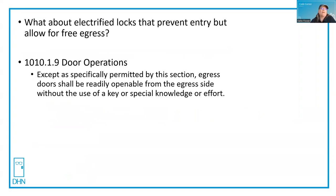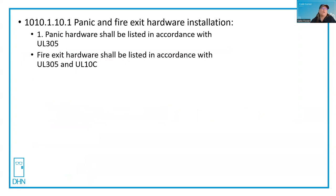Another example of a reference standard is under panic hardware and fire exit hardware, Section 1010.1.10.1. Panic hardware shall be listed in accordance with UL 305, whereas fire exit hardware shall be listed in accordance with UL 305 for panic as well as UL 10C, which is the test standard for fire doors. You don't find UL 305 referenced under the lock set section — if an AHJ asked you for a cylindrical lock listed UL 305, you wouldn't find anybody that makes it, because UL 305 is the standard for panic hardware. So unless a standard is referenced by the code, it does not apply.